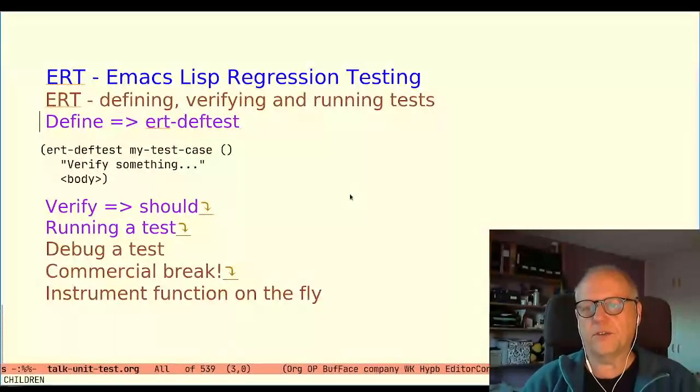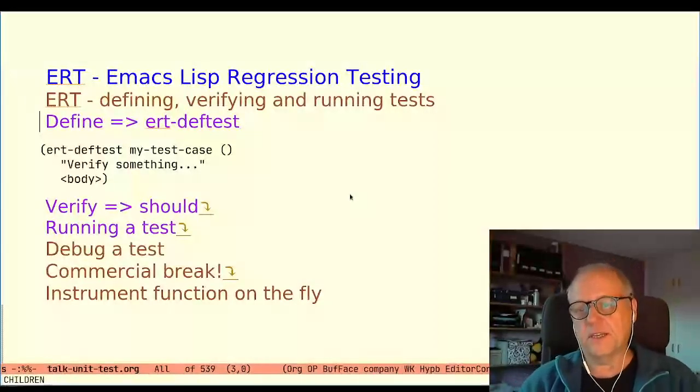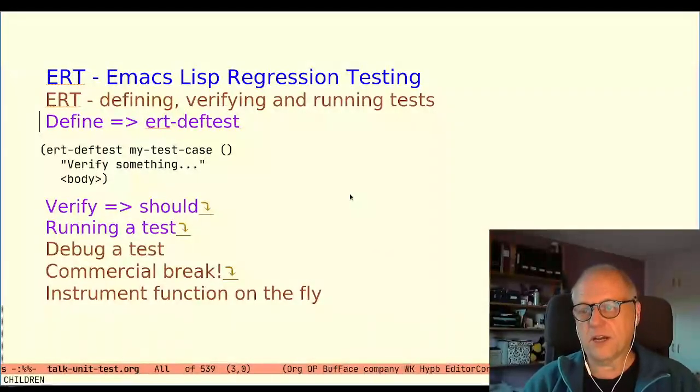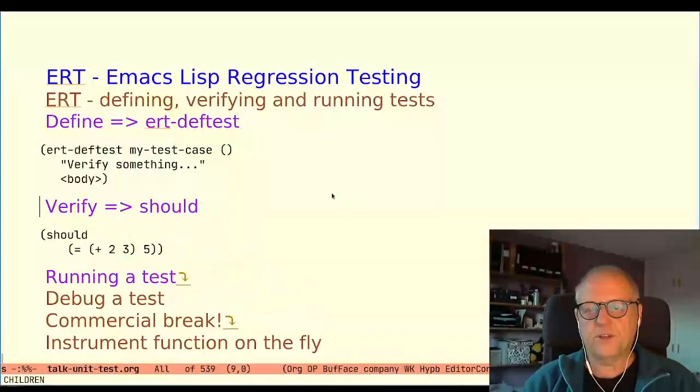So the body is where all the interesting things happen. Here you prepare the test, run it and verify the outcome. Schematically it looks like this. You have the ert-deftest, you have the test name and the doc string and then the body. So it is in the body where everything interesting happens. The test is prepared, the function of the test is executed and the outcome of the test is evaluated. Did the test succeed or not? The verification of the test is performed with one or more so-called assertions and in the ERT they are implemented with a macro should together with a set of related macros. Should takes a form as argument and if the form evaluates to nil the test has failed.